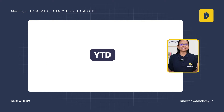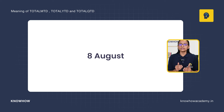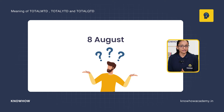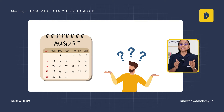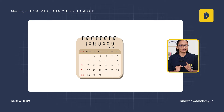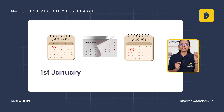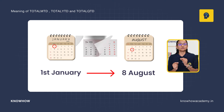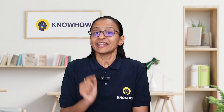YTD means Year-to-Date. Imagine today is 8th August and you want to find out how many sales you made this year. Since the year is not yet over, you start calculating from the first day of the year, January 1st, until today, 8th August 2024. It counts from 1st January 2024 to 8th August 2024, and whatever sum you get is called Year-to-Date.